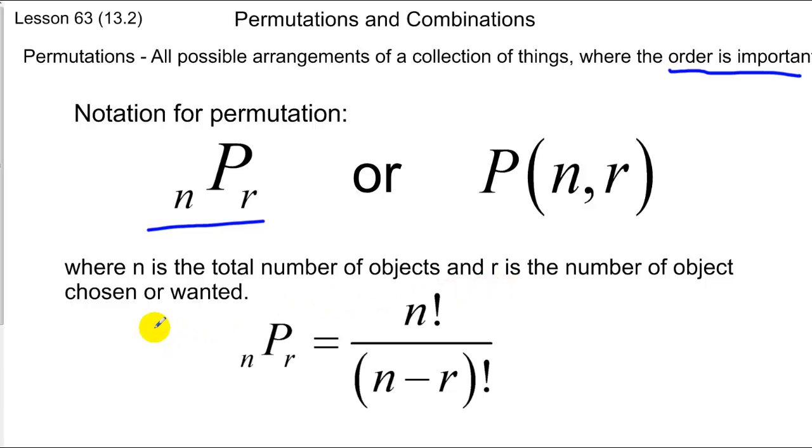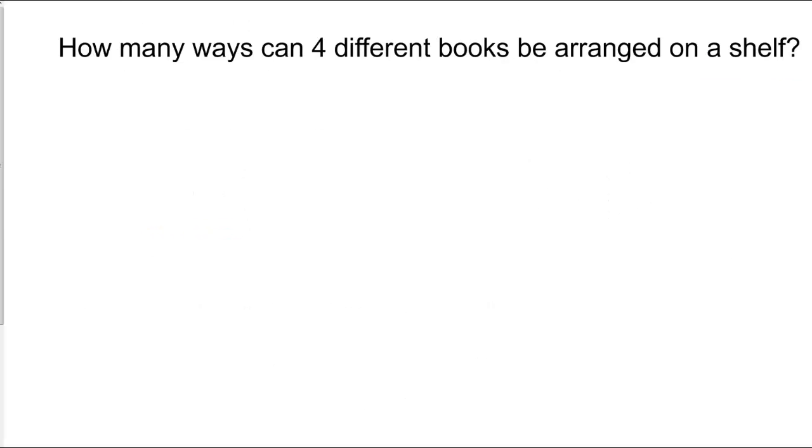Depending on the publisher you use, you may have two different notations for this. There's nPr or P(n,r), where n is the total number of objects you're taking from, and r is the number of items from that set number of objects that you want to place. The way to calculate this is you take n factorial, or the total number of items factorial, over (n minus r) factorial, and you'll get the number of permutations. Let's take a look at a couple of problems and see what this looks like.